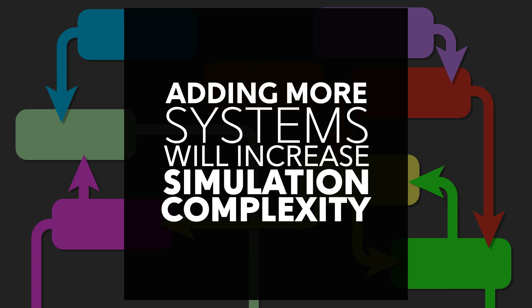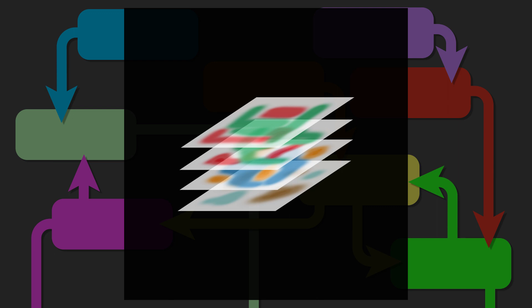Simulations can become more complex as we layer more systems into the simulation. SimCity or Cities: Skylines use this almost literally. Traffic, pollution, poverty, crime, utility systems — each of these has their own independent effects on the world, and then they're layered together to simulate the progress of a city.